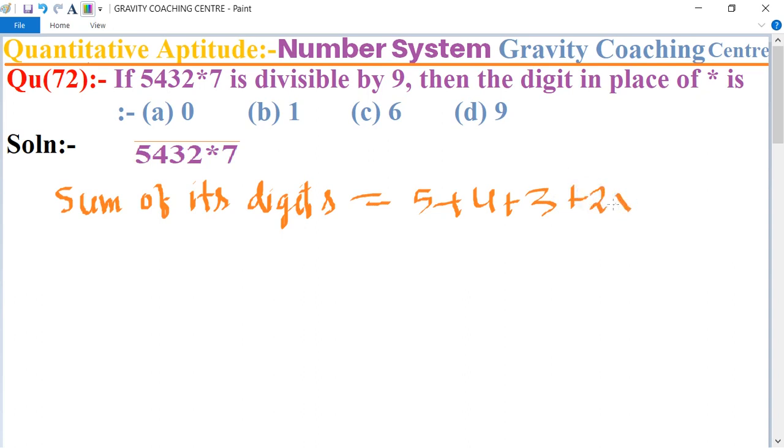So the total sum is 21 + *. If we take star equal to 6, it becomes 27, and 27 is divisible by 9.